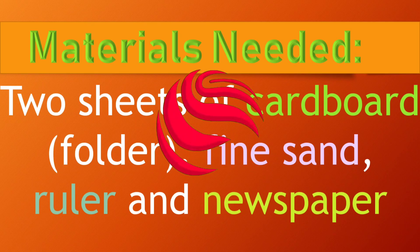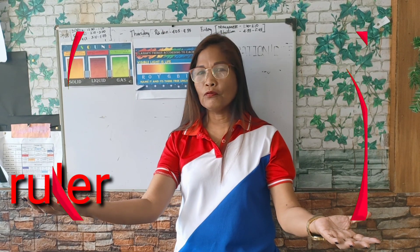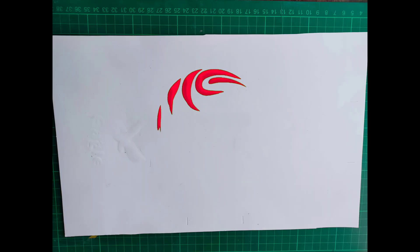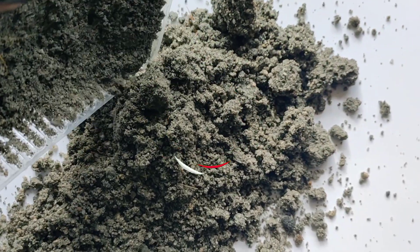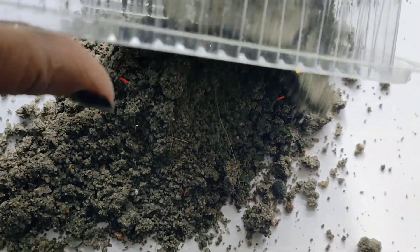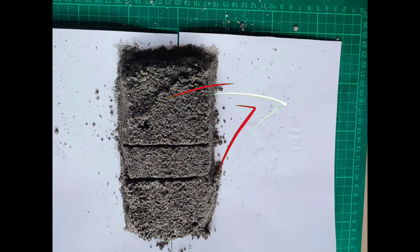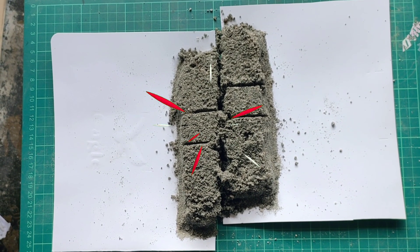Ang kinakailangan nating materials para sa activity nito ay ang mga sumusunod: dalawang pirasong folder, ruler, buhangin, at newspaper. Let's proceed to the procedure. Number one, kumuha ng newspaper para hindi magkalat ang buhangin. Ayusin ang dalawang gilid ng cardboard katulad nito. Ibuhos ang buhangin sa gitna ng dalawang cardboard. Number four, pantayin ang buhangin at lagyan ng dalawang guhit sa ibabaw nito gamit ang ruler. Ilalin ang magkabilang dulo ng cardboard sa magkabilang direksyon tulad nito.